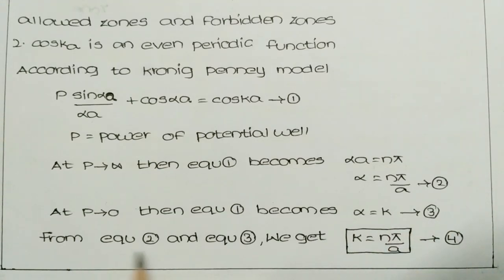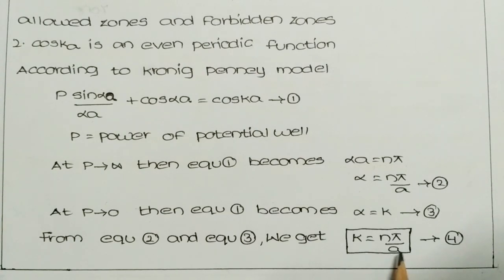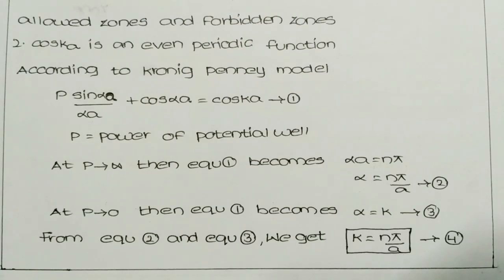From equations 2 and 3, we get k equal to nπ/a, where k means the wave vector, n means the order, and a means the edge of the lattice or the distance between two lattice points.